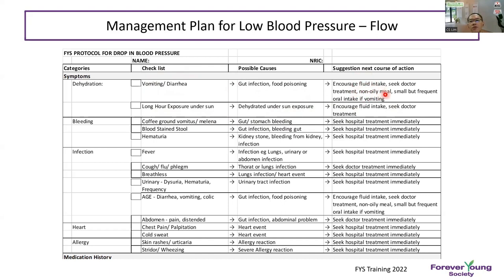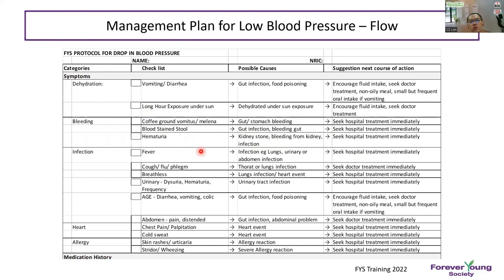For sun exposure, encourage fluid intake and seek doctor treatment, as we don't know whether dehydration has caused acute kidney injury. Check for bleeding symptoms — coffee-ground vomiting, melena stool, blood in stool, or hematuria — which may indicate stomach or gut bleeding, or kidney stones. Advise hospital treatment accordingly. For infection screening, check for fever, flu, phlegm, breathlessness, or urinary symptoms like dysuria and frequency indicating UTI.